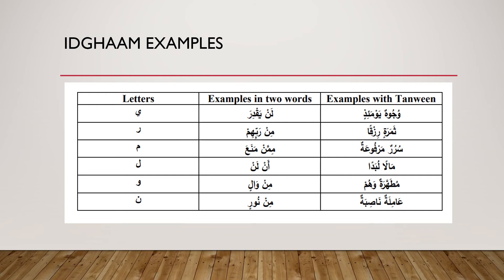As for the remaining examples: for the meem — 'mimman mana'a', 'sururun marfu'ah'. As for the lam, like the ra, it is idgham bi-ghayri ghunna, with no ghunna. As for the wa and noon, there is idgham bi-ghunna — incomplete idgham, idgham naqis. Examples: 'min wa' and 'mutahharatun wahum', 'min nurin', ''amilatun nasibah'.